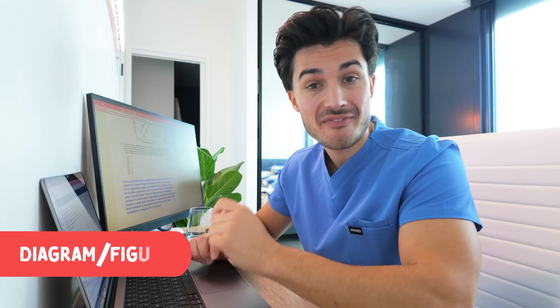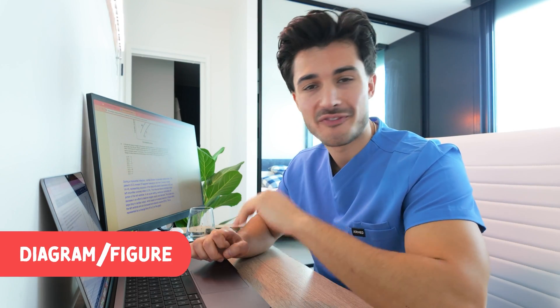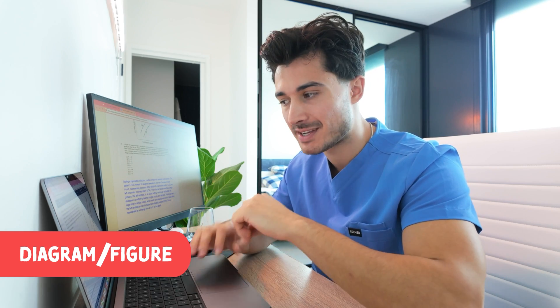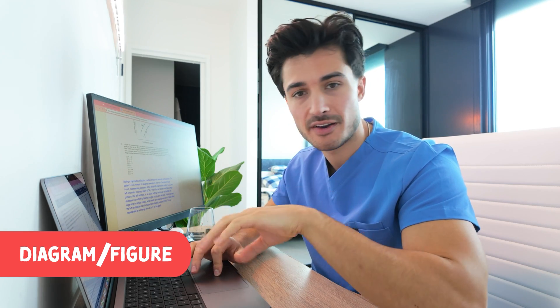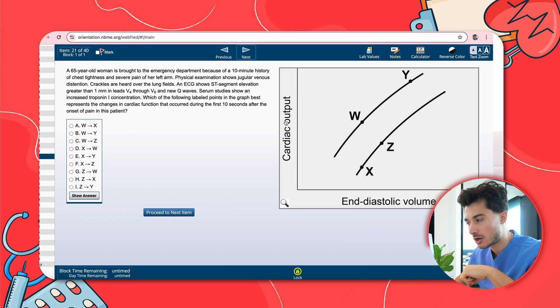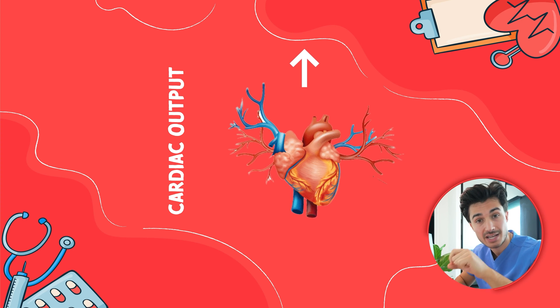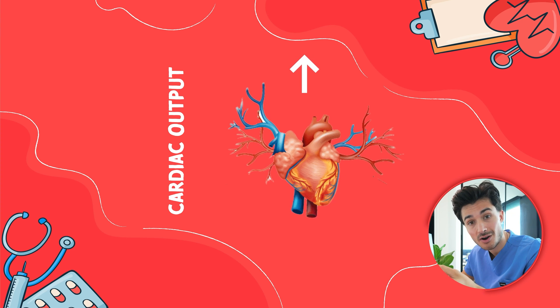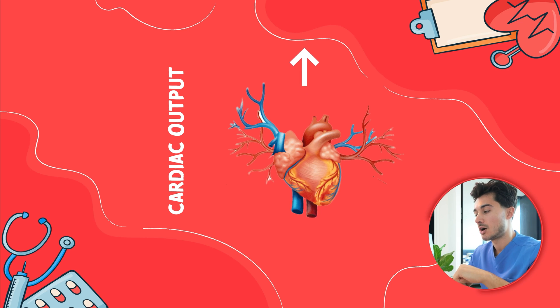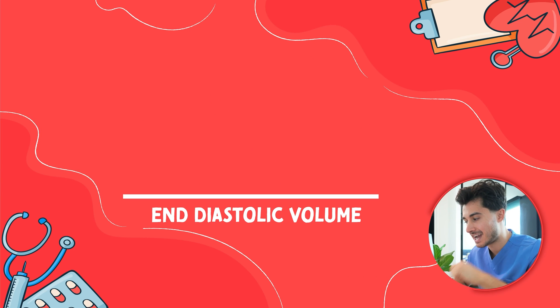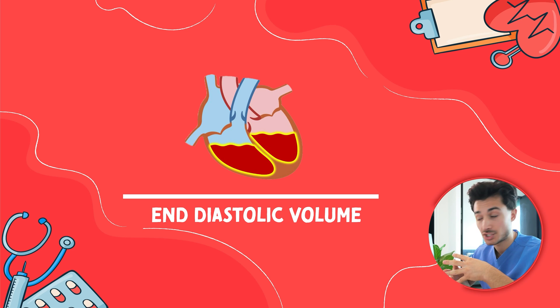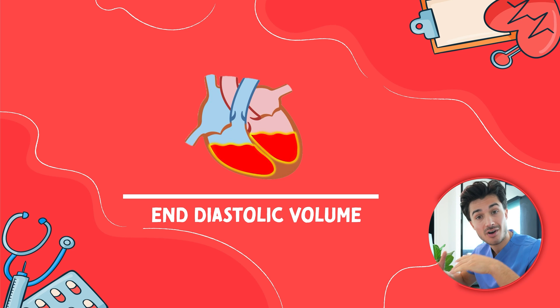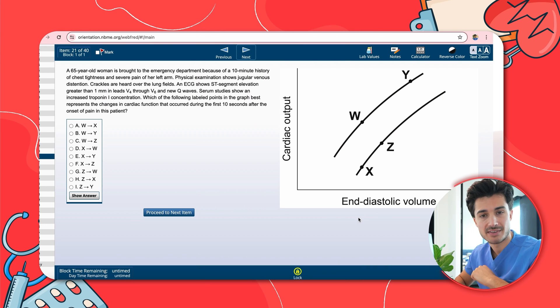Now let's dive into a diagram/figure style question. Don't freak out — we'll go through this step by step. First, identify your Y and X axes. Along the Y axis we have cardiac output — heart rate times stroke volume, the amount of blood pumped each minute. On the X axis we have end-diastolic volume — the amount of blood in the heart at the end of diastole, at the end of filling.